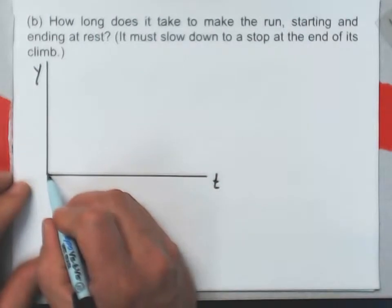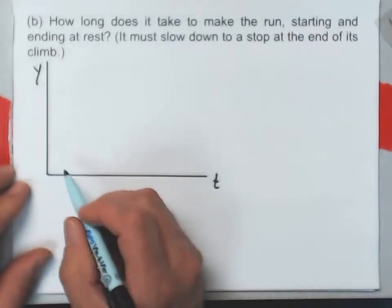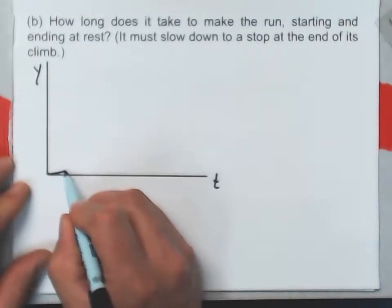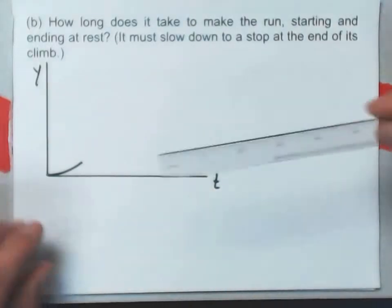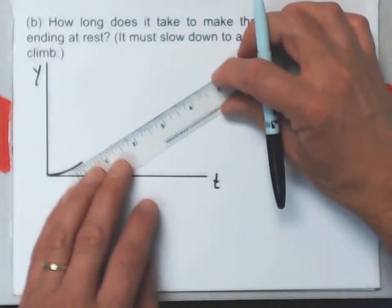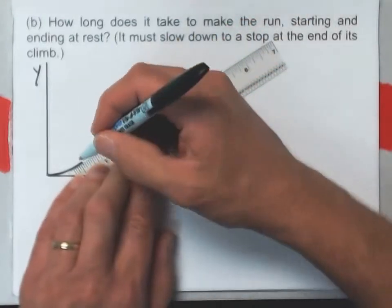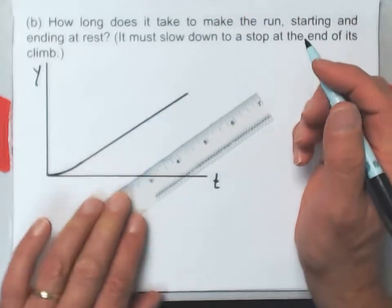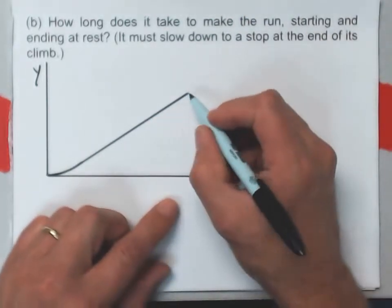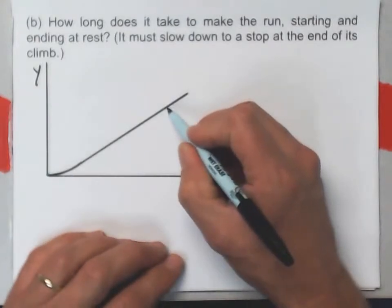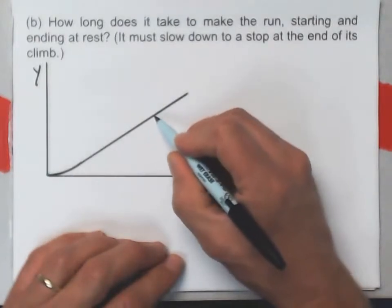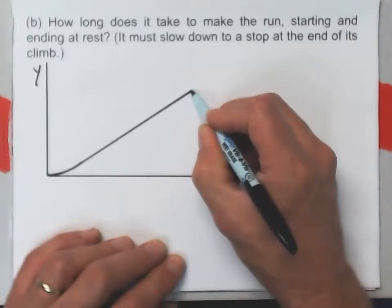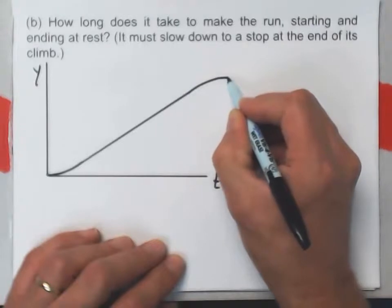I'm not going to put any labels or numbers on here. But it starts from rest, which means the slope of a y versus t graph would be horizontal at the beginning because it has zero velocity. But it accelerates, so it does something like that. Then there's a stretch where it moves at constant speed upward for a while.